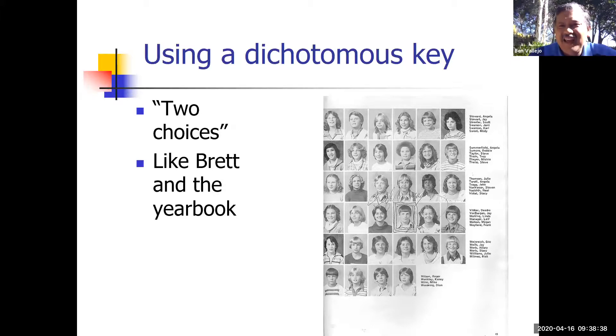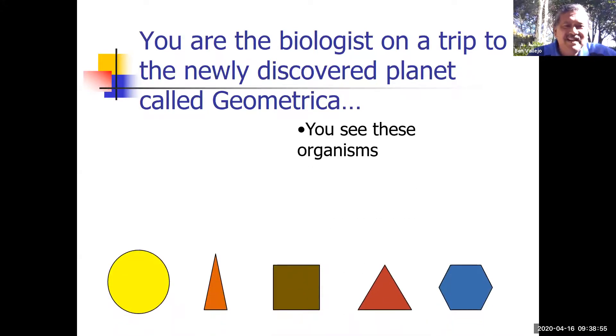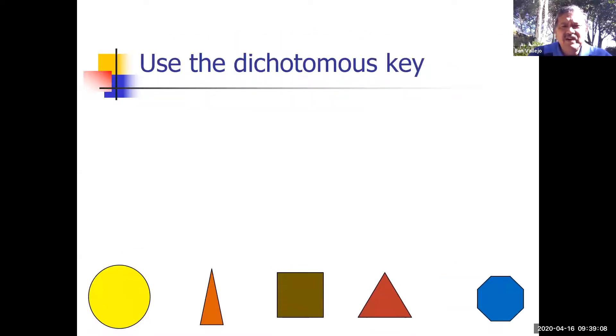Here's a scenario: now you are the biologist on a trip to the newly discovered planet called Geometrica. We have already discovered these organisms—you see them there. But you want to know what they're called. That yellow one over there in the corner—what's that? I don't know its name, but I've seen it before.